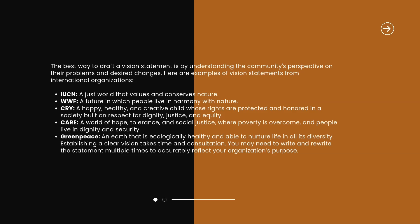Here are examples of vision statements from international organizations. IUCN: a just world that values and conserves nature. WWF: a future in which people live in harmony with nature. CRY: a happy, healthy, and creative child whose rights are protected and honored in a society built on respect for dignity, justice, and equity. CARE: a world of hope, tolerance, and social justice, where poverty is overcome and people live in dignity and security. Greenpeace: an earth that is ecologically healthy and able to nurture life in all its diversity.